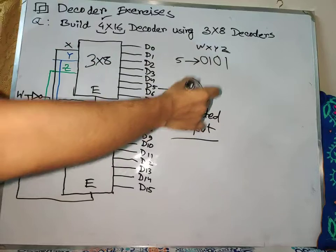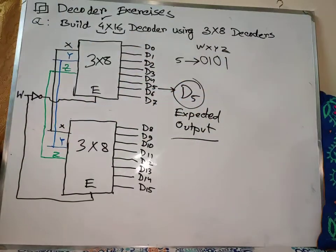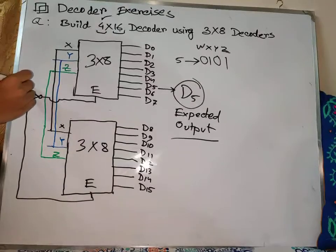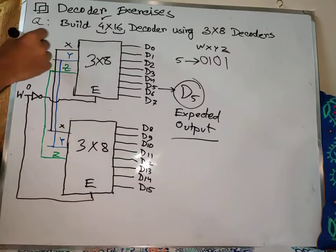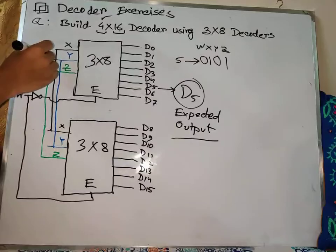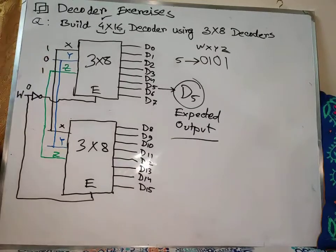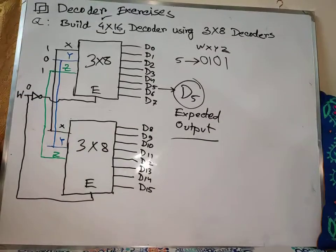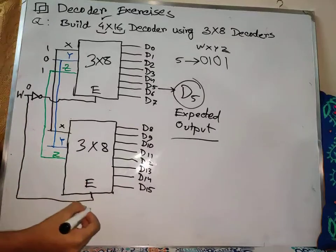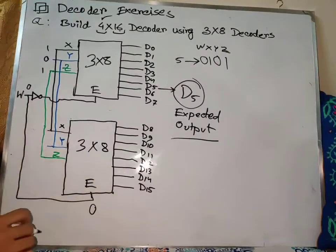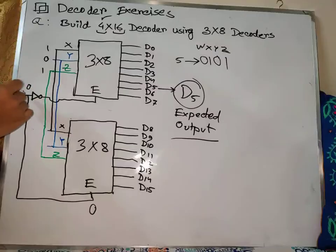Y and Z. So 0, 1, 0, 1. Let's check the values. So W is 0, and X, Y, Z is 1, 0, 1. So W is 0. This is 0, so this value is 0, and here is 0.